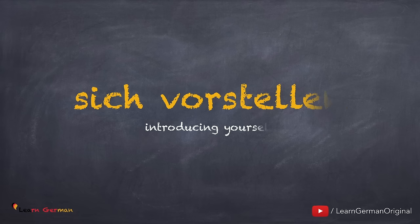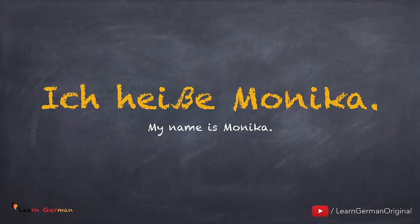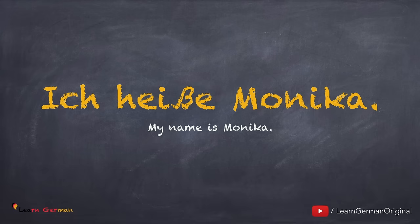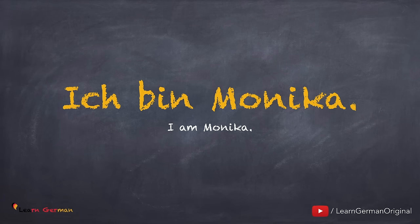Let's begin with the name. Ich heiße Monika. Noch einmal. Ich heiße Monika. Do remember that the beta sign here has the sound of double S. Another way of saying your name is: Ich bin Monika. Noch einmal. Ich bin Monika.